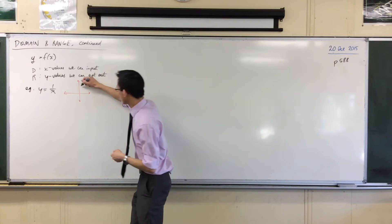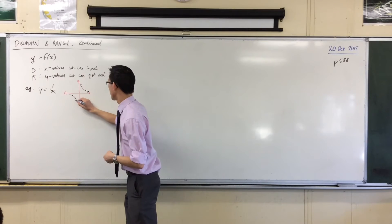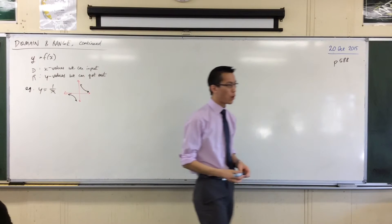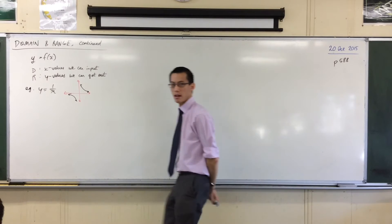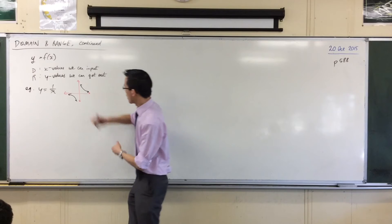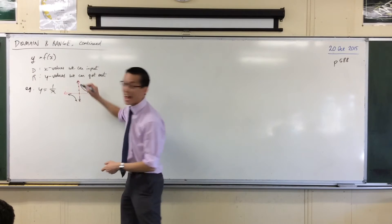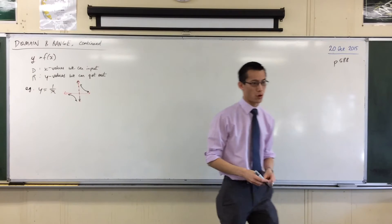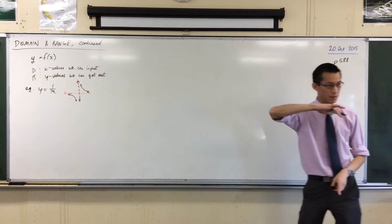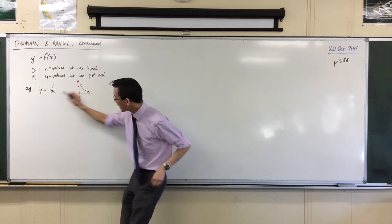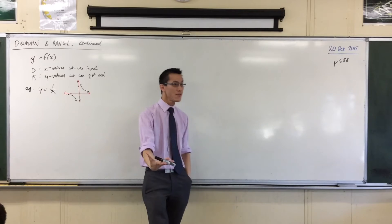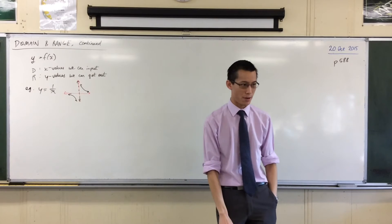1 over x, what does it look like? It looks like this guy. Now, importantly for the idea of domain, I can't put x equals 0 in there. I can't put it in. So what that corresponds to is the fact that I have this asymptote at x equals 0. I know I have a horizontal asymptote as well, but we'll deal with that in a second. I can't put anything into this that makes the denominator 0 because I can't divide by 0.